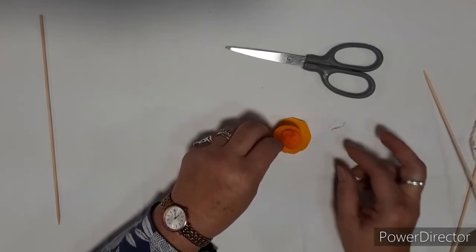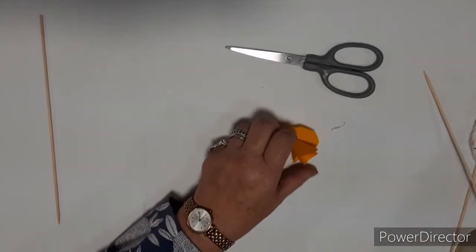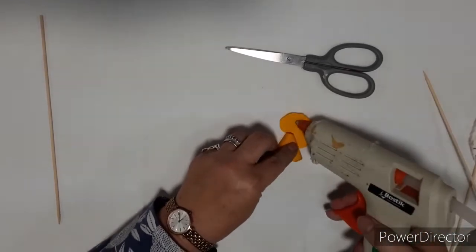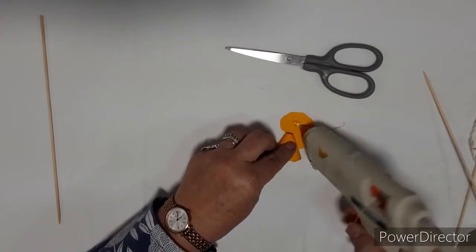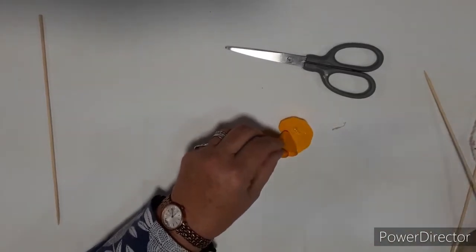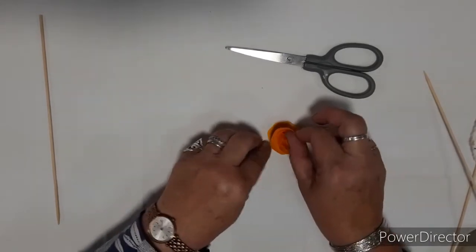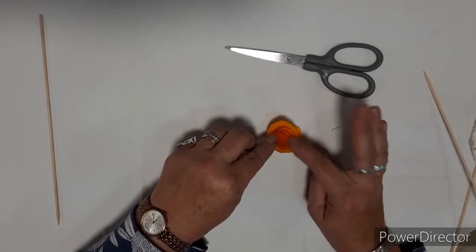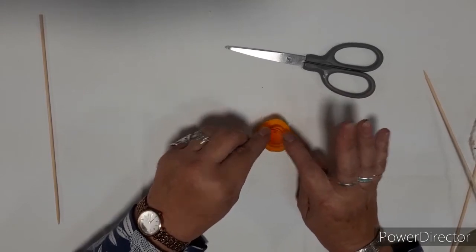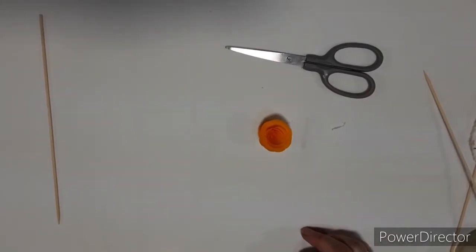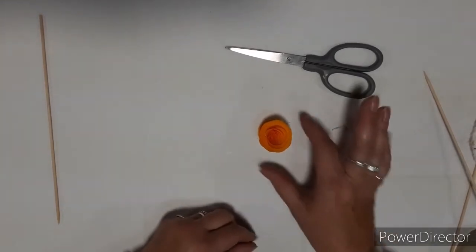So to secure it, we need to pop a blob of glue with the glue gun down on the base and then secure that spiral. Press it down so that it's all connected. And now you've got your paper rose. Quite simple.